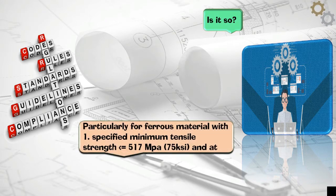Particularly for ferrous material with specified minimum tensile strength less than or equal to 517 MPa, 75 Ksi, and at metal temperature less than or equal to 371 degrees C.